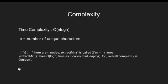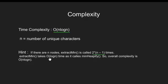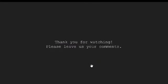Now let's see the complexity of this code. This code will run in O(n log n) time, where n is the number of unique characters in our input. This is because we are calling our extract min function 2*(n-1) times, each time extracting 2 nodes with minimum value. Also, each call takes O(log n) time to heapify. So with this, we come to an end of this tutorial. If you have any doubts or suggestions, please leave them in the comment section below. Thanks for watching.